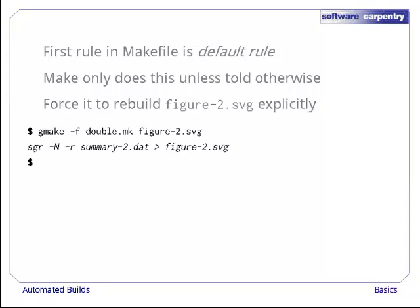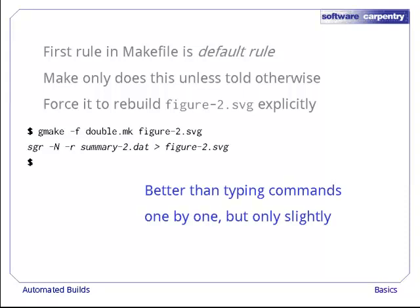Here's the command. We use dash f double.mk to tell make what makefile to use, and then give it the name of the target we want it to handle. Again, building things one at a time like this is slightly better than typing individual commands, but only slightly.